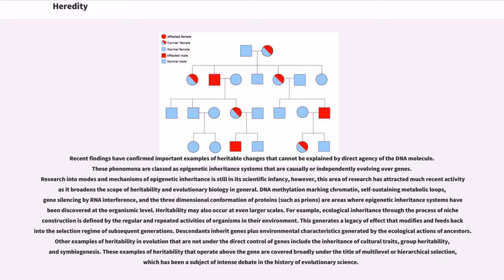Other examples of heritability and evolution that are not under the direct control of genes include the inheritance of cultural traits, group heritability, and symbiogenesis. These examples of heritability that operate above the gene are covered broadly under the title of multi-level or hierarchical selection, which has been a subject of intense debate in the history of evolutionary science.